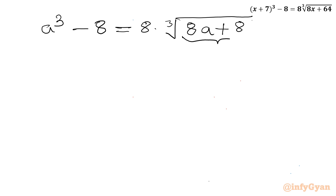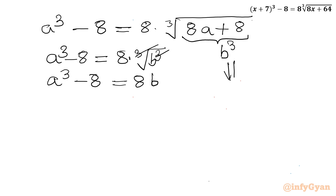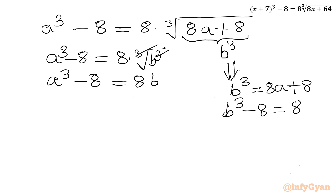Now consider the radicand equal to b³, so 8a + 8 = b³. The equation becomes a³ - 8 = 8 × cube root of b³ = 8b. From the substitution b³ = 8a + 8, we get b³ - 8 = 8a. So our two equations are: a³ - 8 = 8b, and b³ - 8 = 8a.